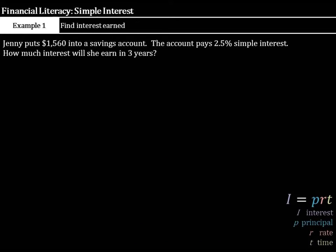Let's take a look at our first example. Jenny puts $1,560 into a savings account. The account pays 2.5% simple interest. How much interest will she earn in three years? Let's start first by defining our variables. I is interest, and that's the thing we don't know. So, we'll just be keeping that as a variable. P is the principal. Well, the principal, remember, is the money that you put in or borrow. In this case, you're putting in $1,560.